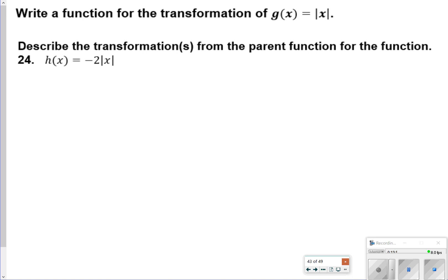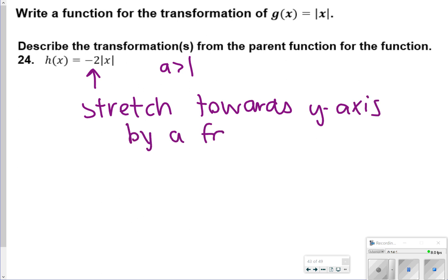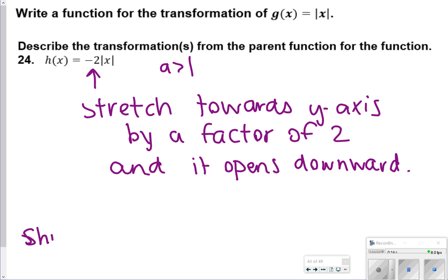For 24, we're just going to describe the transformation that's happening here. The only transformation that we see in number 24 is this negative two. And so that would be a stretch because A is bigger than one and it's going to be towards the y-axis by a factor of two. It opens downward because it's negative. So you needed to have both of those things done there. If you wrote shrink, it would be incorrect. Shrinks are for your smaller numbers. So when A is in between a zero and a one or a fraction. So just make sure you keep that in mind. Maybe you want to review your study sheet for number 24 as well.